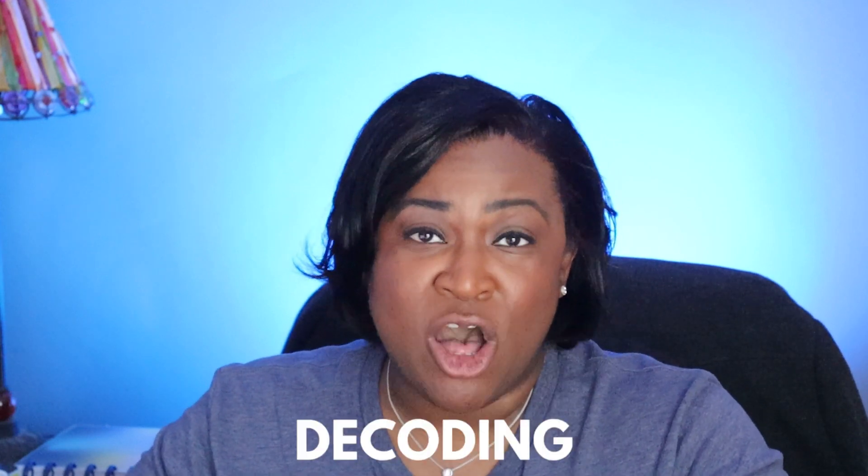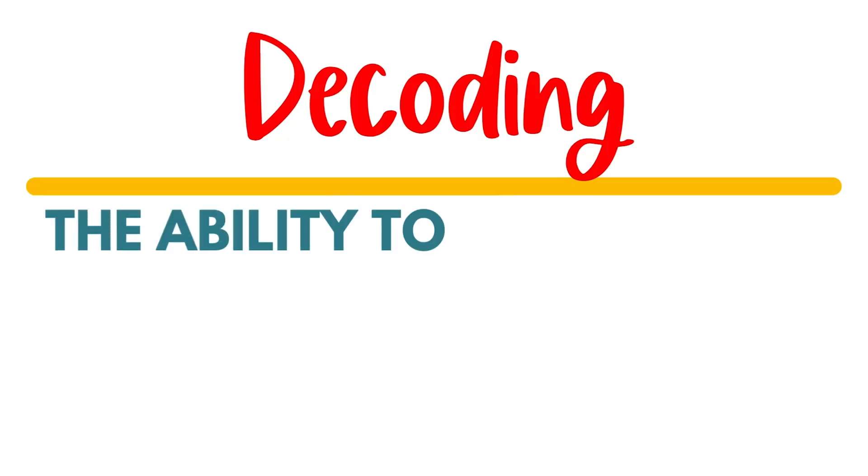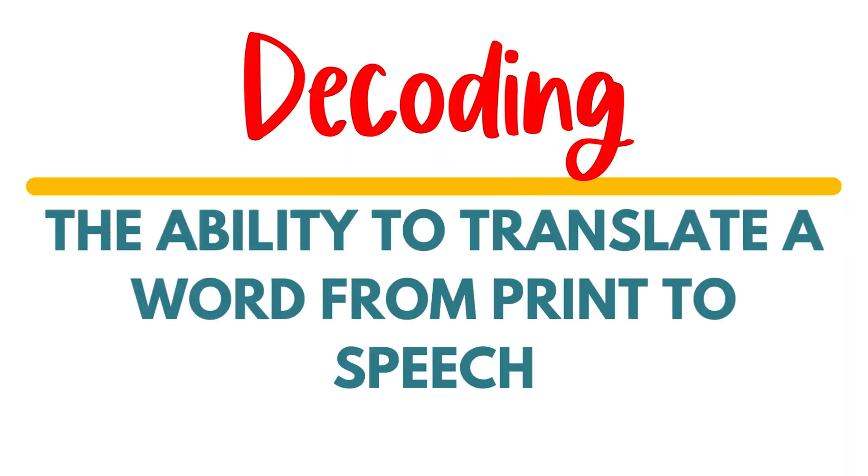The next strand or sub-skill is decoding, which is the ability to translate a word from print to speech. This includes knowledge of the alphabetic principle and knowledge of the phoneme-grapheme correspondence. Phonemes are the smallest unit of sound, and a grapheme represents a phoneme — so a grapheme could be one, two, three, or four letters used to represent a phoneme or a sound.